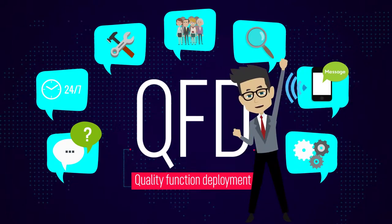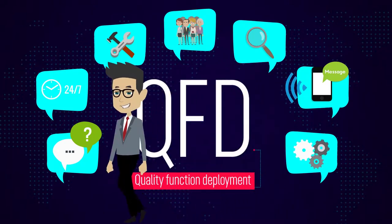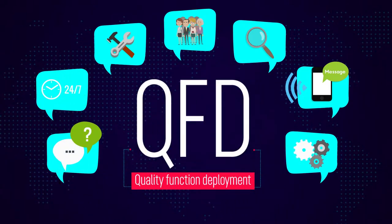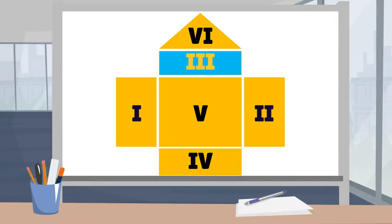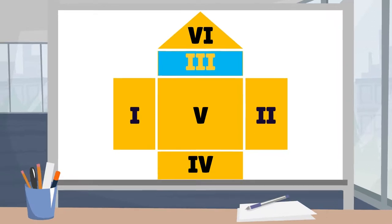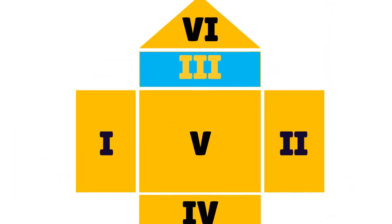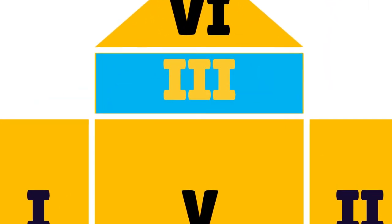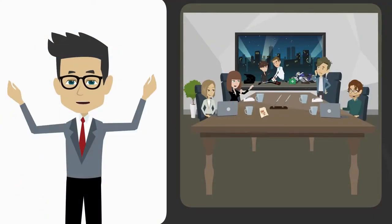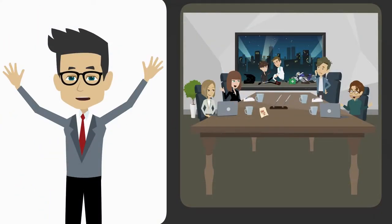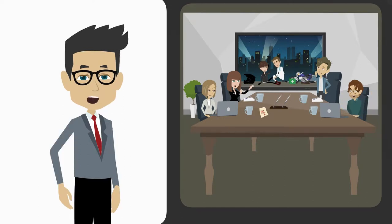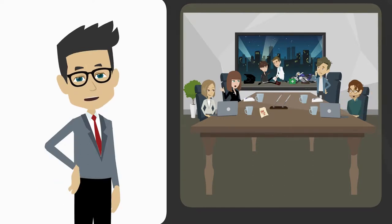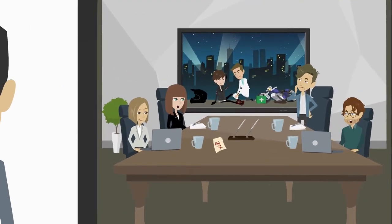The Quality Function Deployment. It's time now to learn how to transform user needs into technical variables. This process should be conducted by the whole design team together. Discussion about every single need is the most meaningful way of achieving suitable technical variables. Let's consider this example.